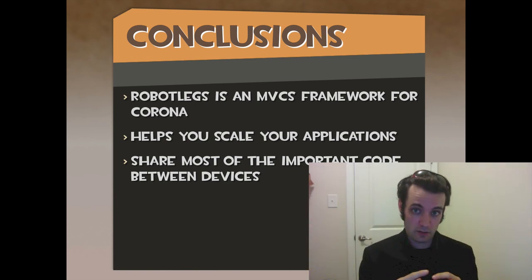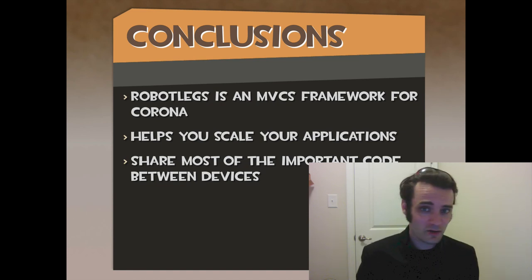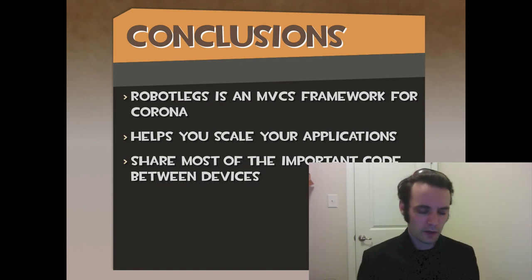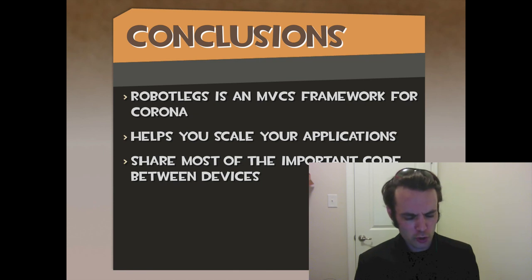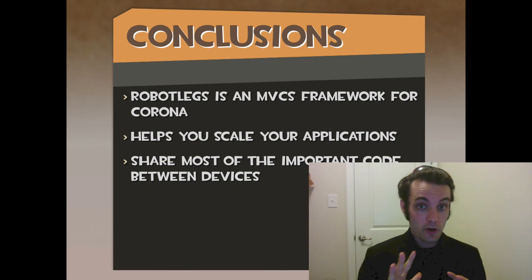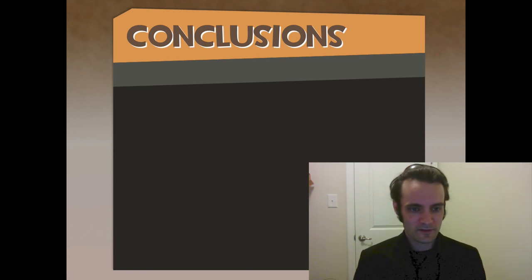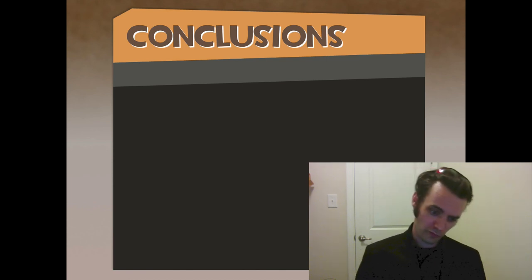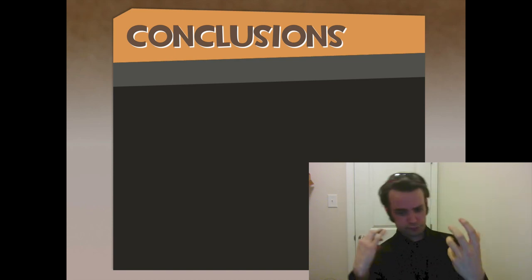Most importantly, you can share code between devices. RobotLegs is built so that models, services, commands, and some mediators share that code regardless of what device you're on. You don't have to recode per device — no recoding your model for Core Data and then redoing it in Java for Android. Instead, you spend your clients' money on new features rather than redundant implementations.